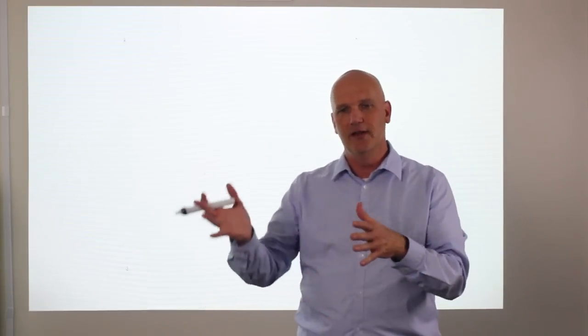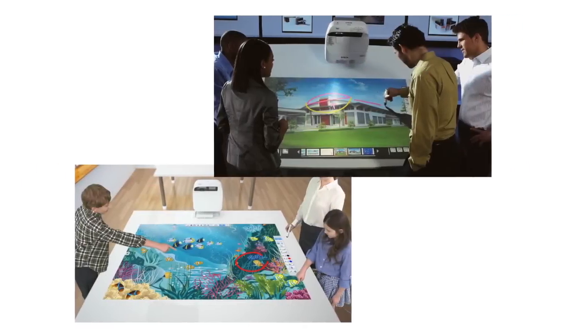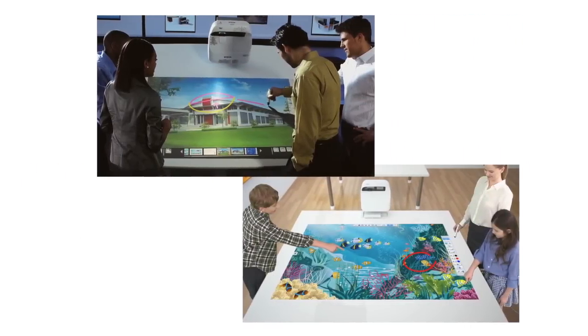Epson BrightLink projectors ship with a wall mount, and the ideal installation is like this one that you see here. However, we have other options for installing onto a table. The table mount allows you to turn the projector 90 degrees and project downward onto a table top, where you can gather around and use it as an interactive desk.